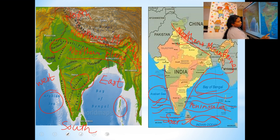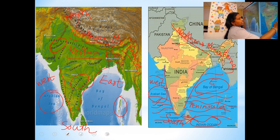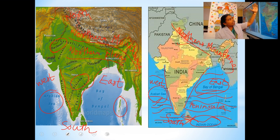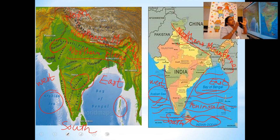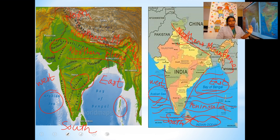In the south, we have the Indian Ocean. In the west, we have the Arabian Sea. And in the east, we have the Bay of Bengal. In the northern part, our country is protected by the northern mountains or Himalayas. Thus, we can say that our country has natural boundaries on all four sides.